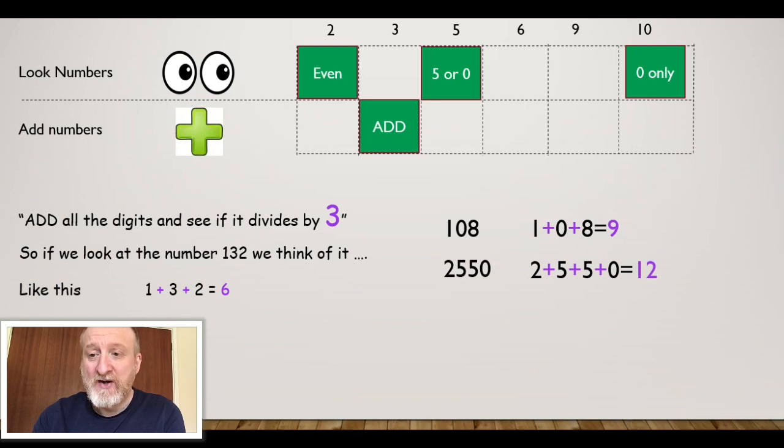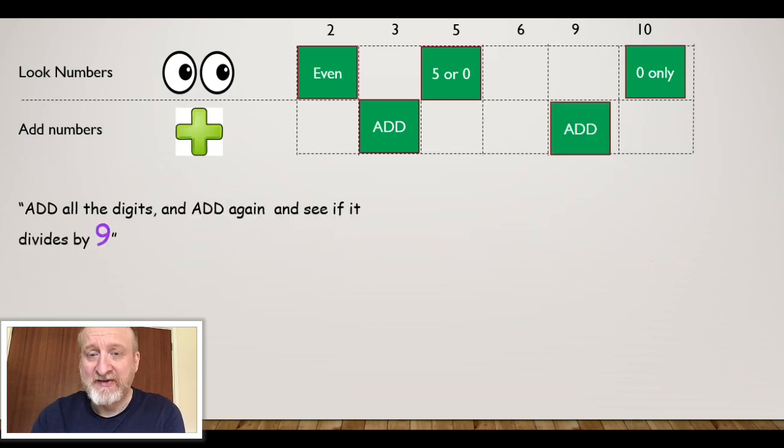9 is in the 3 times table, so therefore it's divisible by 3. 2,550, break it down, add those numbers up, I get 12. 12 is in the 3 times table, so therefore it's exactly divisible by 3. 597, add the numbers up, comes to 21, exactly divisible by 3. 21 is in the 3 times table.